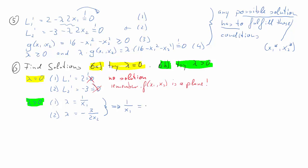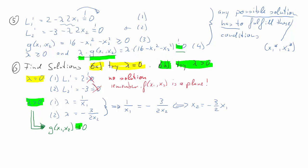Both expressions equal lambda, so we equate the right-hand sides: 1/x₁ = negative 3 over 2x₂. Solving for x₂ gives x₂ = negative 3x₁ over 2. We will substitute this into the constraint. When lambda is greater than 0, the complementary slackness condition implies g must equal exactly 0, so we are operating on the boundary of the constraint.